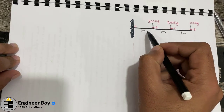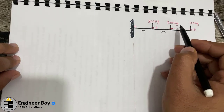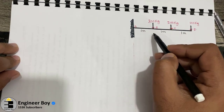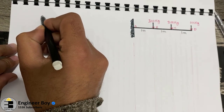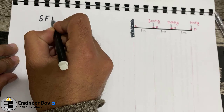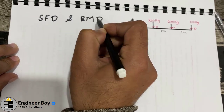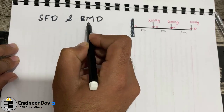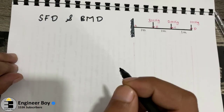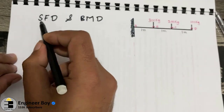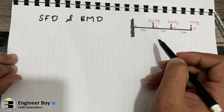We have a cantilever beam with 300, 200, and 100 kg point loads along its span. The span is three meters long. We are asked to draw the shear force diagram and bending moment diagram, shortly known as SFD and BMD. To draw these diagrams we need the shear force and bending moment at each section of the beam.